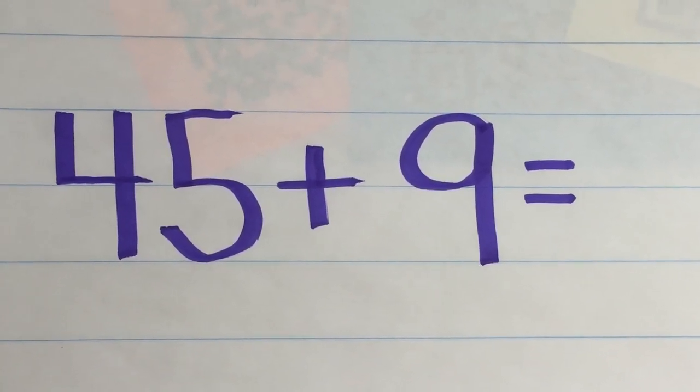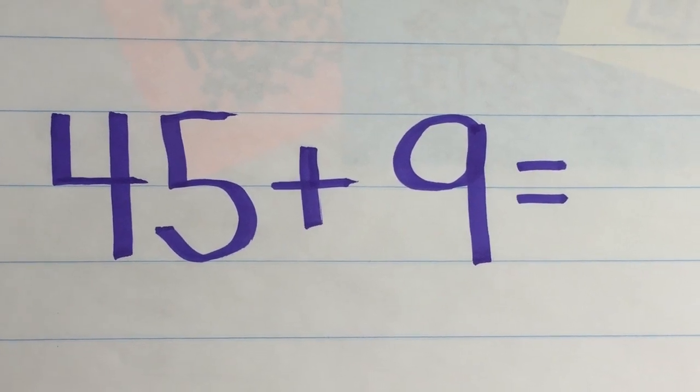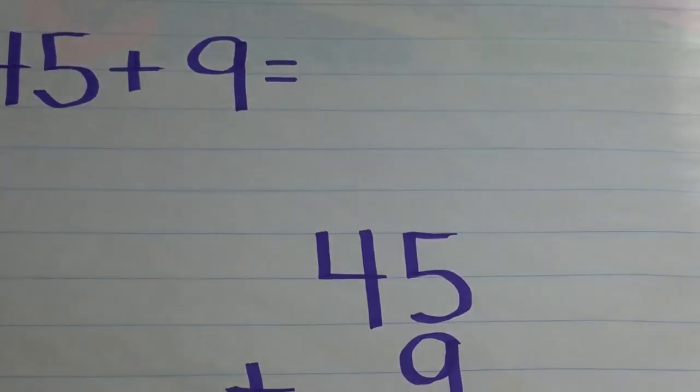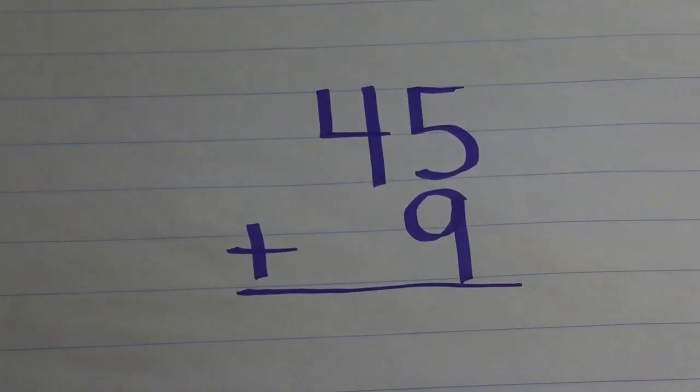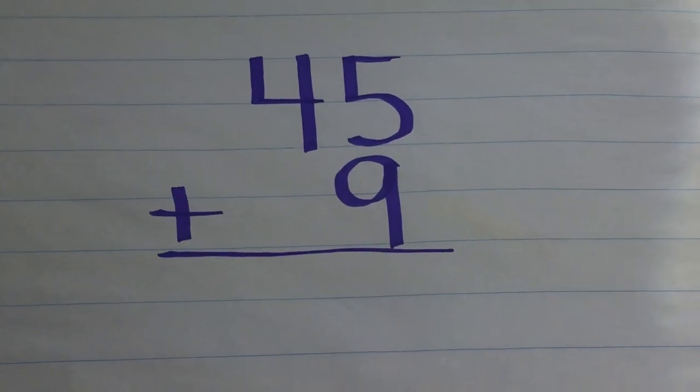So here you'll see your addition problem, 45 plus 9. You're going to start by telling your kids to write that vertically. So I'm taking that math problem, 45 plus 9, now it's vertical. And I would do that with the kids.